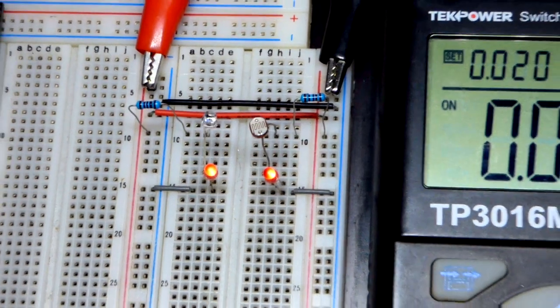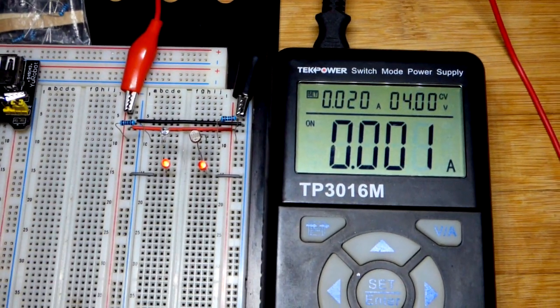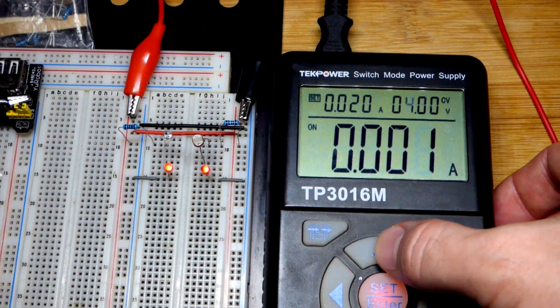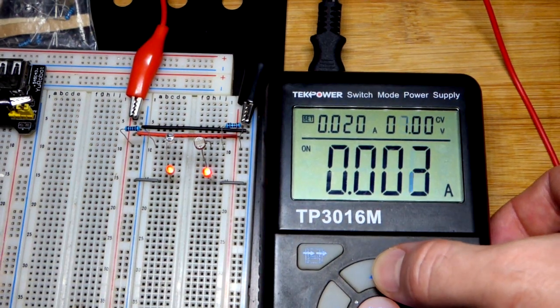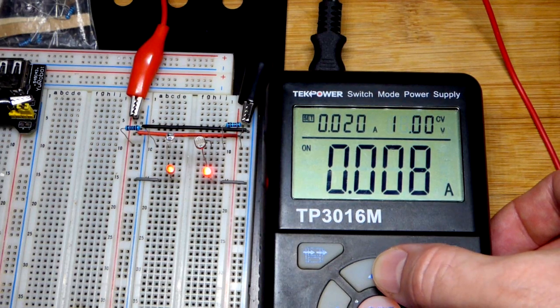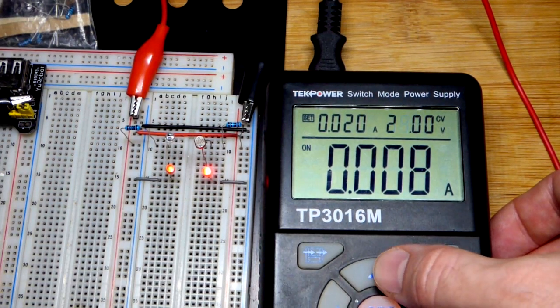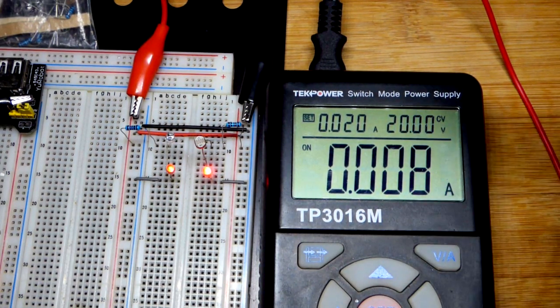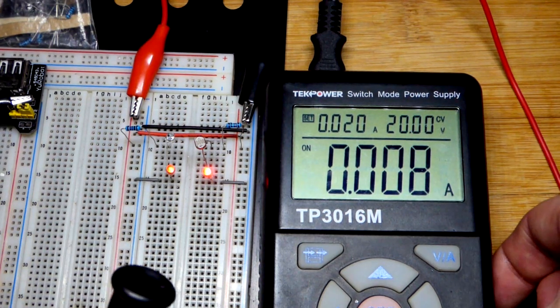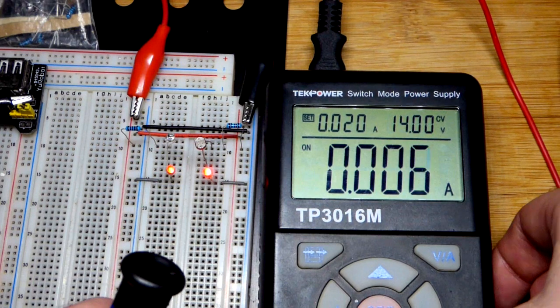We're going to do this kind of quick. The main thing is you can see here that the light dependent resistor LED is getting brighter as I increase the voltage even with the same light level, whereas the photo diode stayed the same brightness right there.